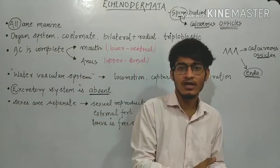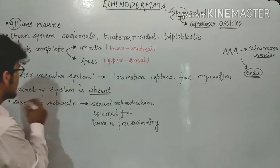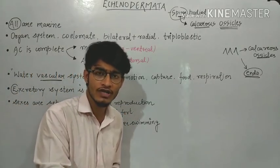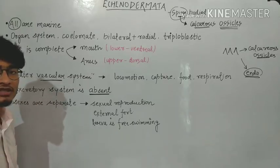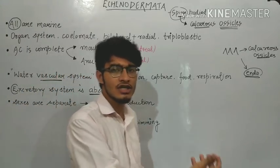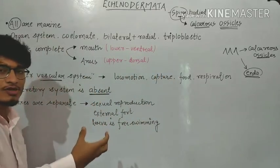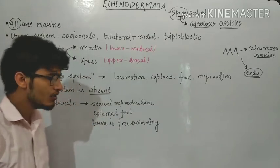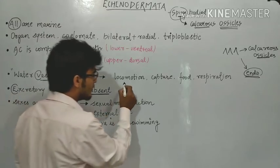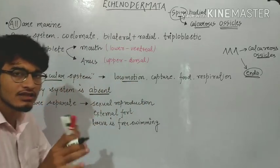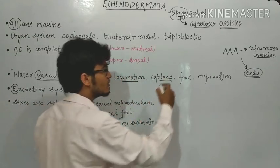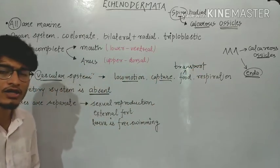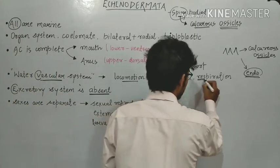The most characteristic feature is the water vascular system. We have already talked about the water canal system in case of Porifera. Here, water vascular system is present in the last phylum, that is Echinodermata. This water vascular system helps the echinoderm in locomotion — that is, in movement — after that to capture and transport food from one part of the body to the next, and also in respiration.